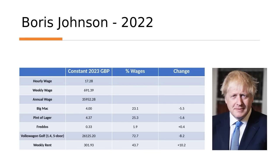Then of course Boris Johnson came in. Johnson immediately had to deal with the pandemic. They printed loads of money. You could see the effect on hourly wages — they have actually gone down again from where they were under May and Cameron. The price of the Big Mac and lager did decrease in real terms. The price of cars went down under Johnson as well — possibly the result of people not buying cars during the pandemic. But have a look at those rental prices — they've now gone up 10%, which means they are now 43.7% of wages.